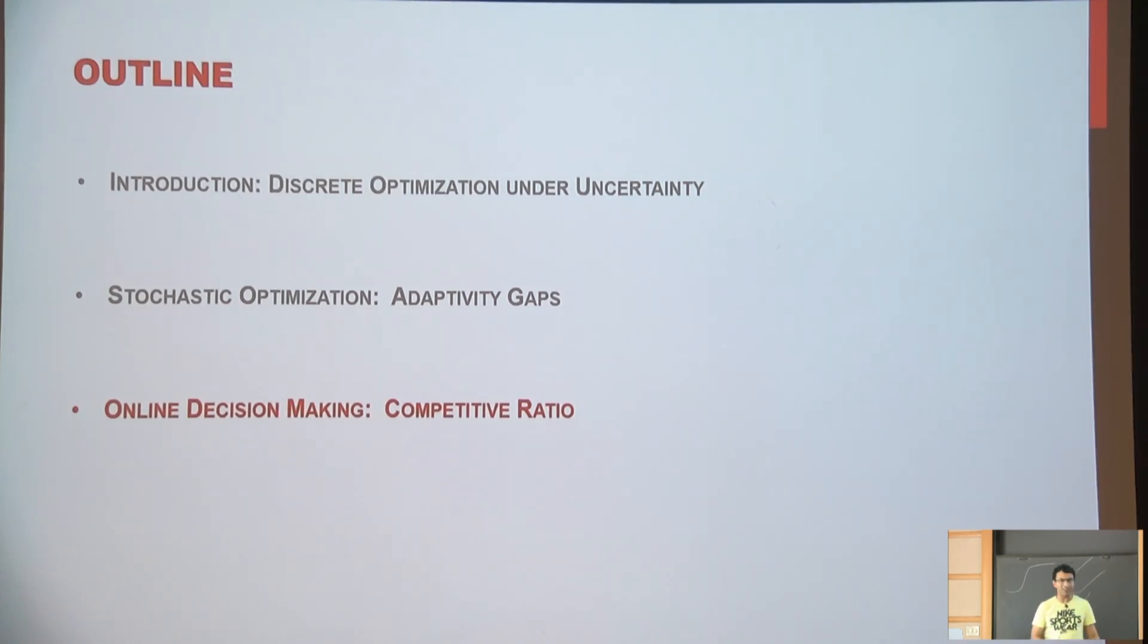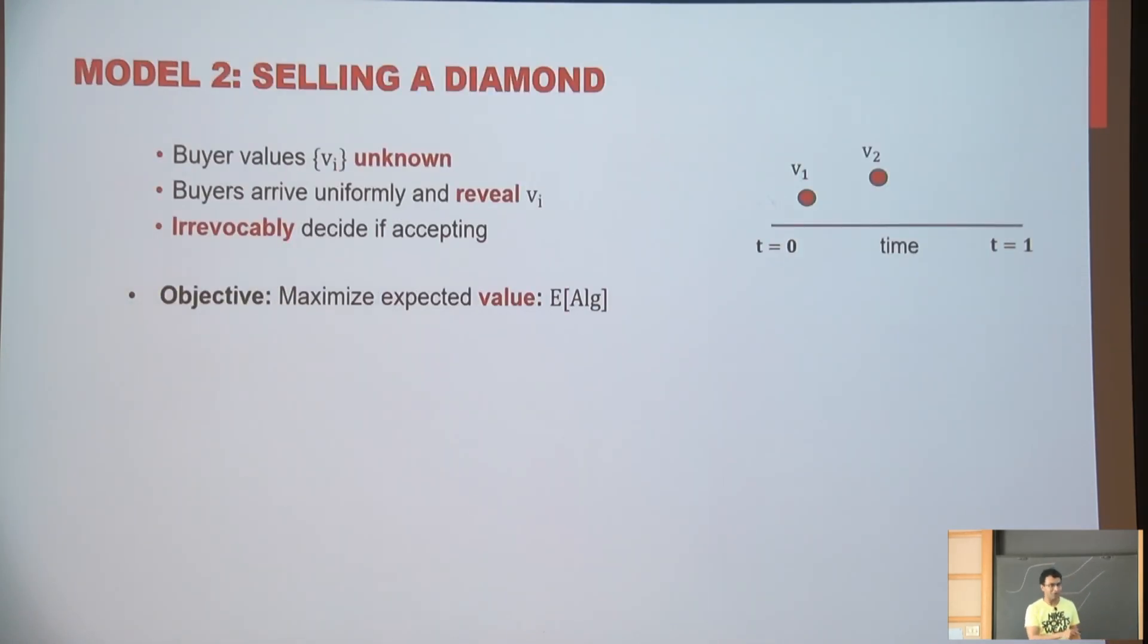So now let me briefly talk about the online decision making. Again, this other model where you don't have priors. And I want to talk about something called competitive ratios to measure the performance of your algorithm. So again, you have this diamond that you want to sell. Now imagine a setting where you don't know the values of these buyers. So these are only non-negative real numbers.